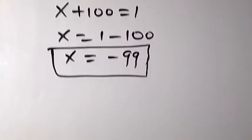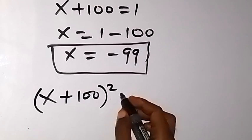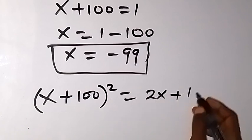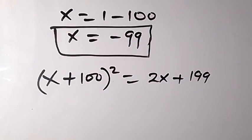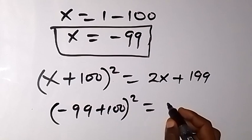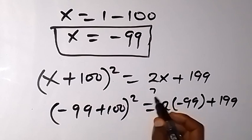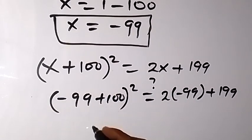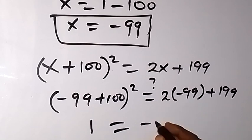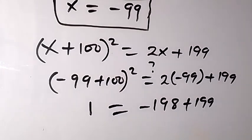To check: we have (x + 100)² equals 2x + 199. Substituting x = -99, we get (-99 + 100)² equals 2(-99) + 199. That gives us (1)² equals -198 + 199, so 1 equals 1. Both sides are equal, confirming our answer.